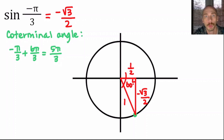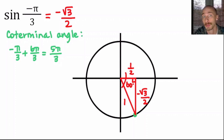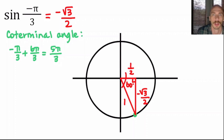If you already know where negative π/3 is, you don't need to find a coterminal angle — if you know the spot on the circle, go for it. We're not checking your work on this. The work is there just to help. Let's go ahead and do another one or two more and then I'll set you loose on the rest of them.